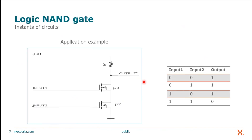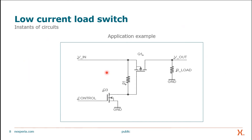Like a logic NAND gate: whenever the two inputs are both high or one, the output will show a low or zero. In any other combination, the output will always be high. A low current load switch is another application example for small signal MOSFETs. We have two small signal MOSFETs here where the Q3 MOSFET controls the more powerful Q1 p-channel MOSFET. This is used in a smartphone to switch on and off small circuitries like Bluetooth or the camera.